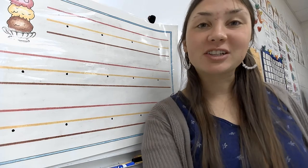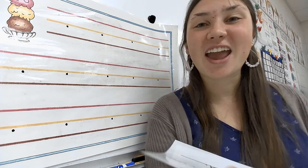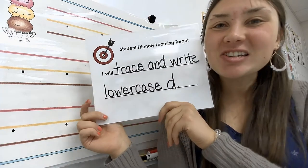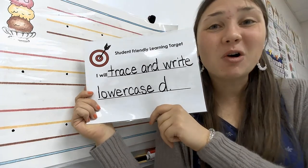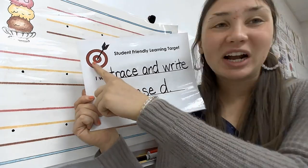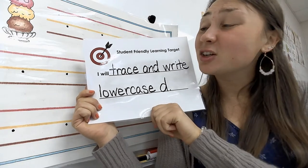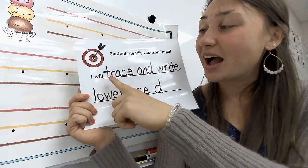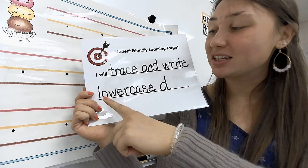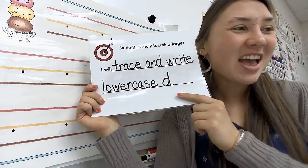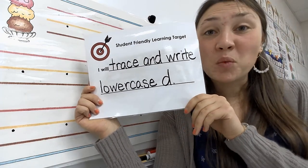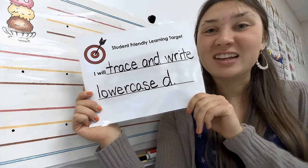Our first page that we're going to do in our workbook is going to take care of our learning target, one of our main goals for today, where we're trying to go, what we're trying to do. The learning target for today is I will trace and write lowercase d. That's going to be one main thing that you're going to do today for our first page.